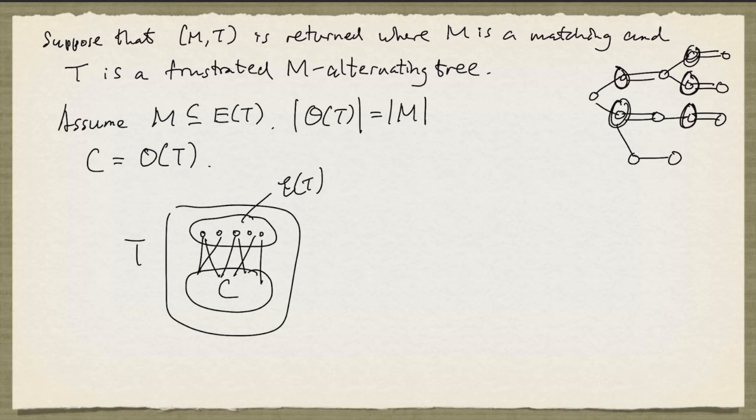And then the graph contains something apart from the tree. And if there's any edge that joins this part to the tree, it has to join to a node in C. Because we cannot have an edge like this. Otherwise, T would not be a frustrated M alternating tree.